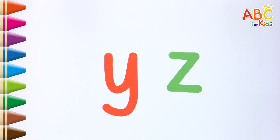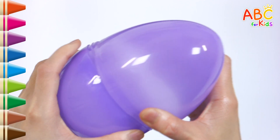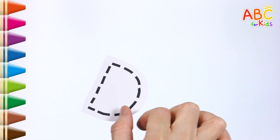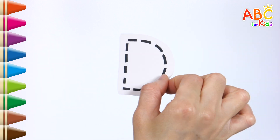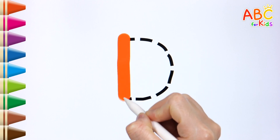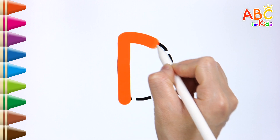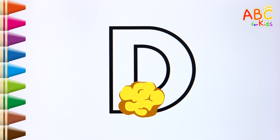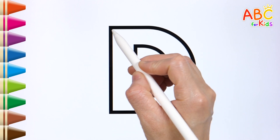Well done! Guess what's in it? It's the alphabet D. Shall we write the letter D along the dotted line? D. Let's color.